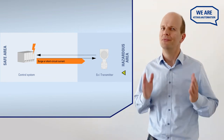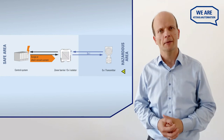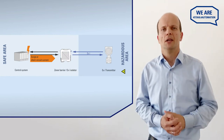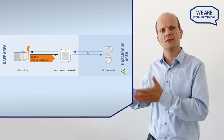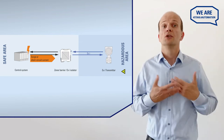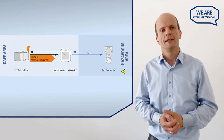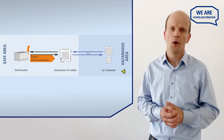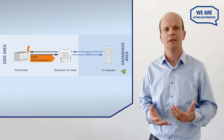That's where the barriers and isolators come in. These devices separate circuits that are intrinsically safe from the ones that aren't, which ensures that events like a surge or a short circuit will not impact the intrinsic safety.